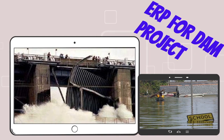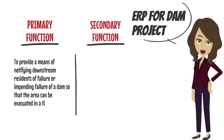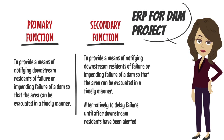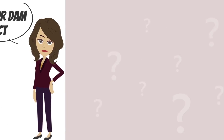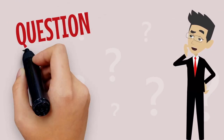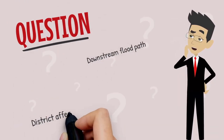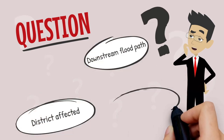Now let's look at an example of an emergency response plan for a dam project. There are two main functions: the primary function and secondary function. Both functions provide a means of notifying downstream residents of failure or impending failure of a dam so that the area can be evacuated in a timely manner. For the secondary function, planning should also include delay strategies of the failure until after downstream residents have been alerted. Several questions should be answered in case of dam project failure, such as the downstream flood path, district, number of villages, and number of people that will be affected.